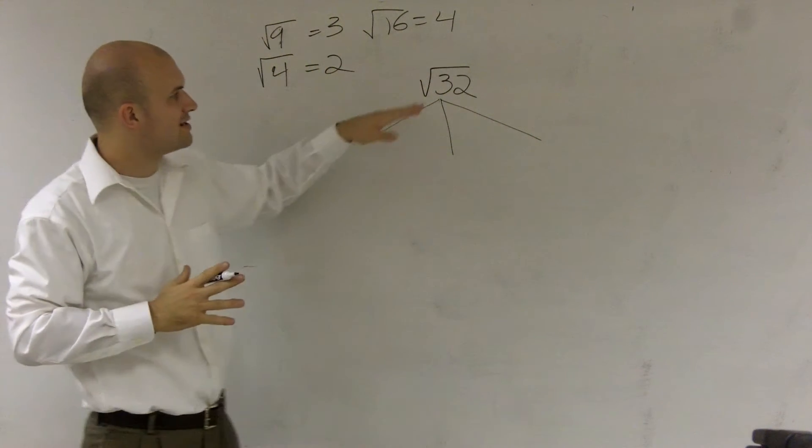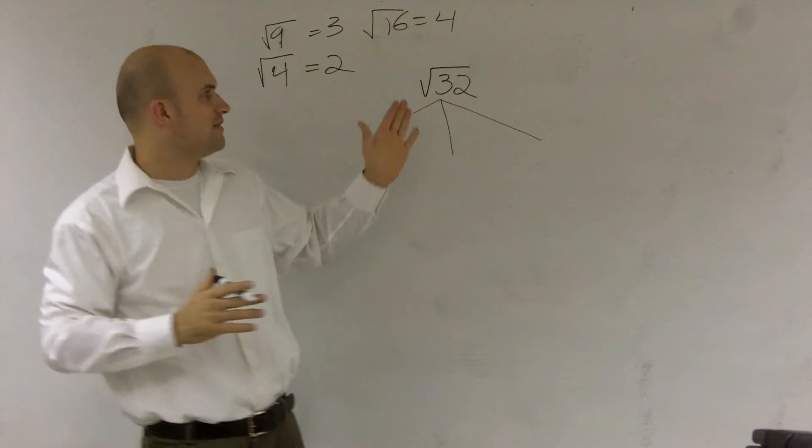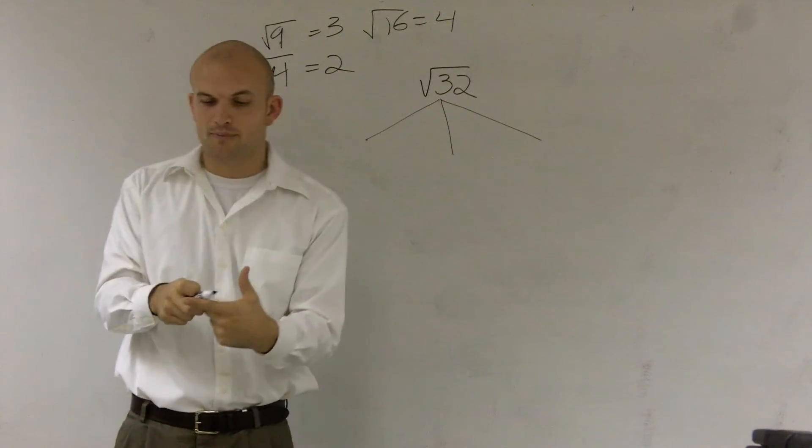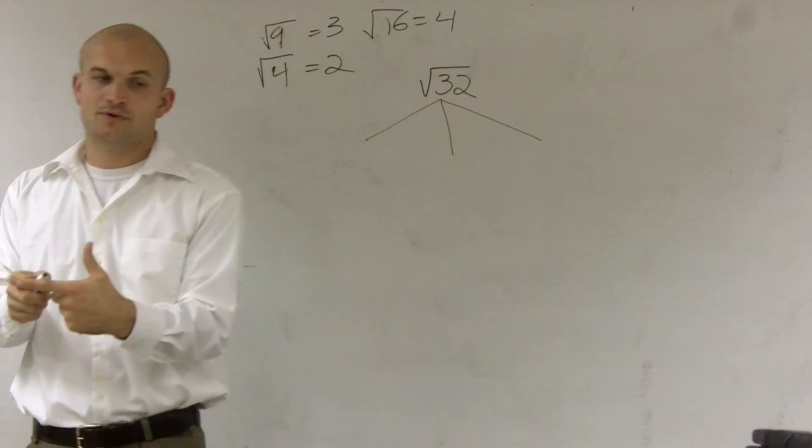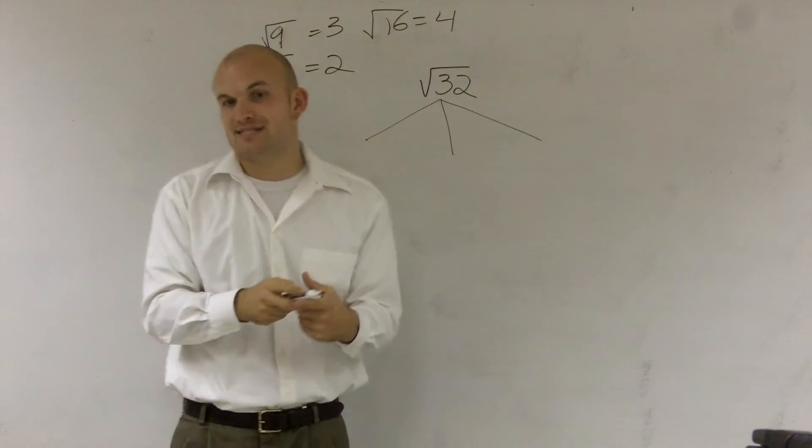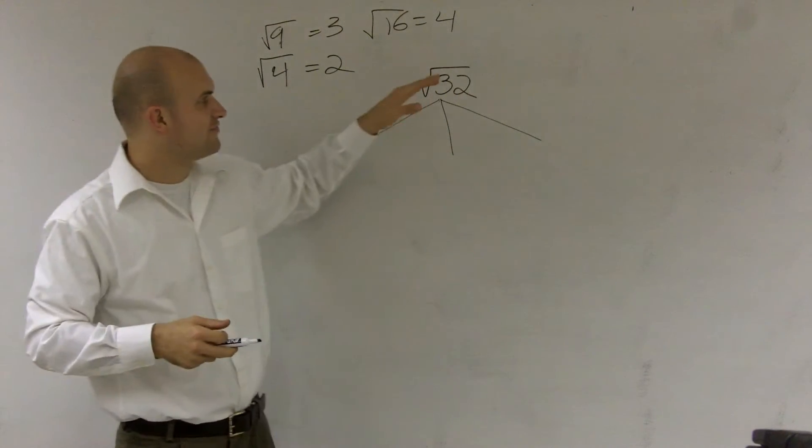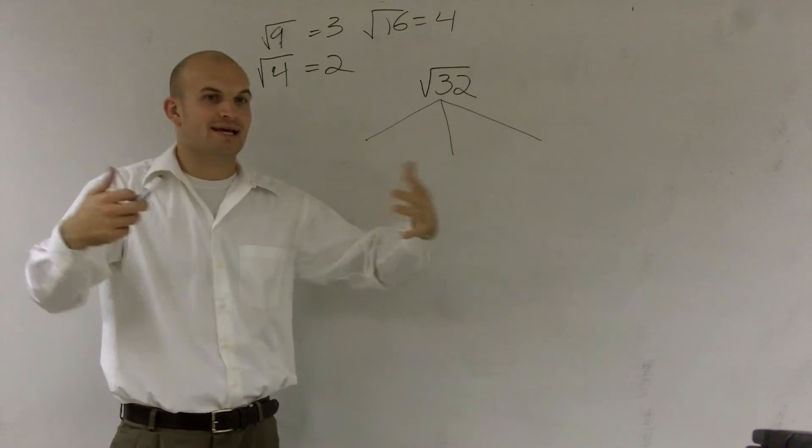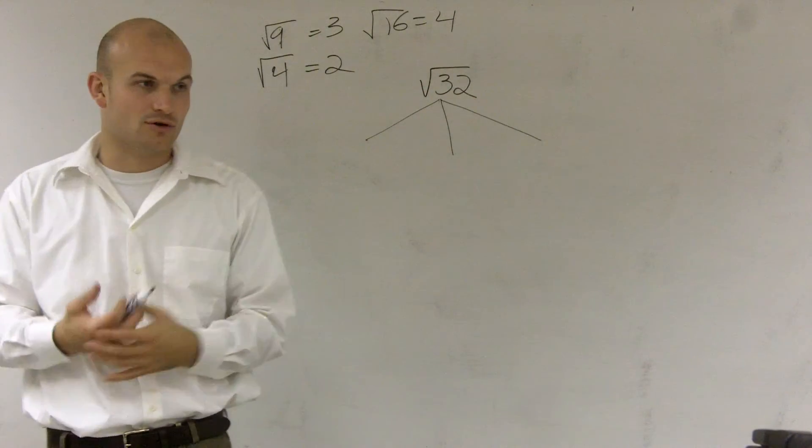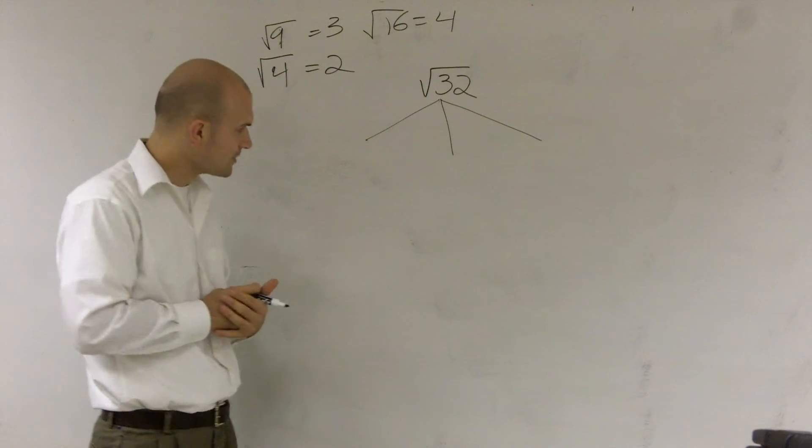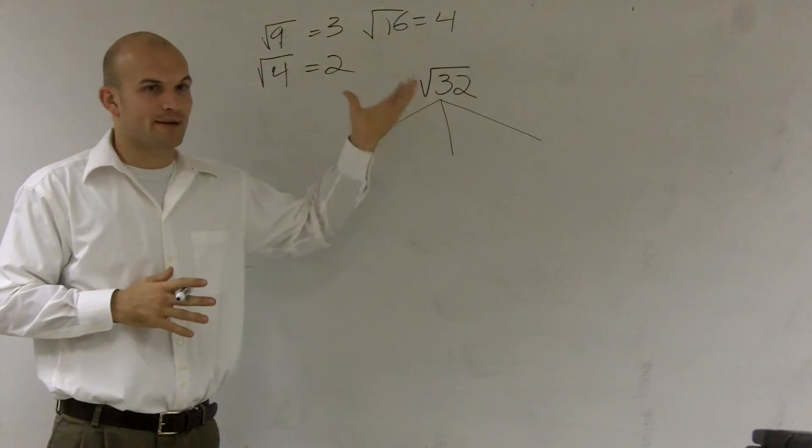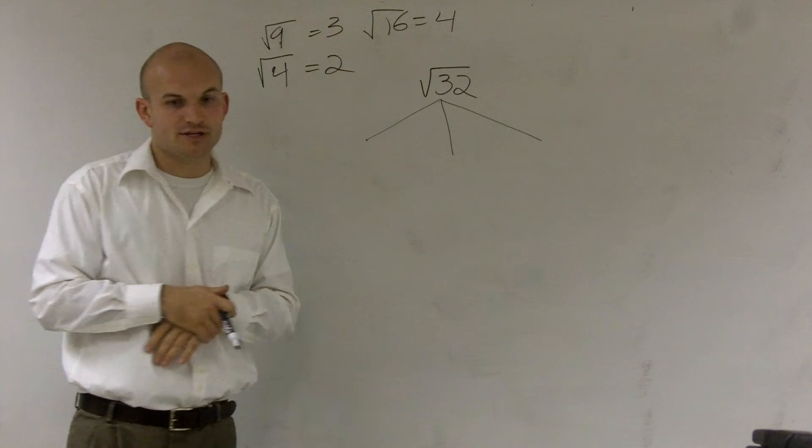So if we have square root of 32, we know that that's not a square number because the next one up would be 25, which is 5 squared. And the next one after that is 36, which would be 6 squared. So I can't physically just take the square root of 32 and get an integer. It's going to be an integer with a fraction or a decimal. So what I'm going to want to do is I'm going to want to manipulate my square root of 32.